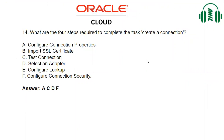What are the four steps required to complete the task: create a connection? Options are: configure connection properties, import SSL certificate, select a connection, select adapter, configure lookup, configure connection security. Option A — configure connection properties — is true. We need to configure server host details and port details, so configure connection properties is correct. Import SSL certificate is not required for connections.